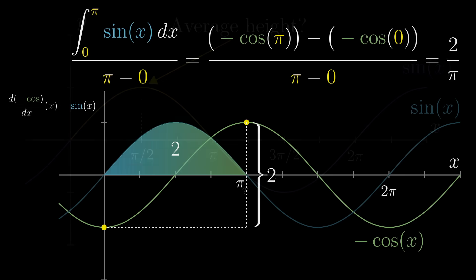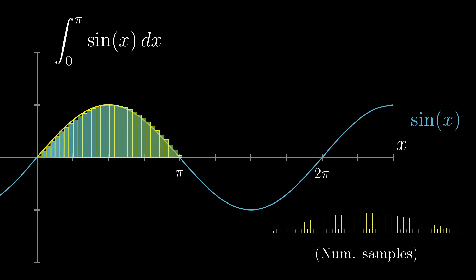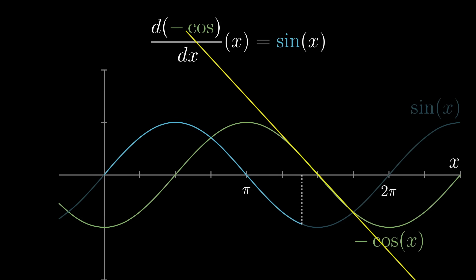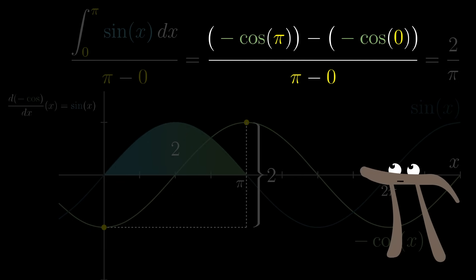I promised at the start that this question of finding the average of a function offers an alternate perspective on why integrals and derivatives are inverses of each other, why the area under one graph has anything to do with the slope of another graph. Notice how finding this average value, 2 divided by pi, came down to looking at the change in the antiderivative, negative cosine x, over the input range, divided by the length of that range.